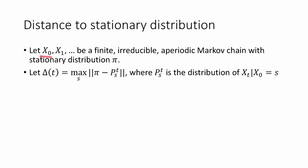Let x0, x1, dot dot dot be a finite irreducible aperiodic Markov chain with stationary distribution π. We saw in a previous video that by the fundamental theorem of Markov chains, there exists a unique stationary distribution.